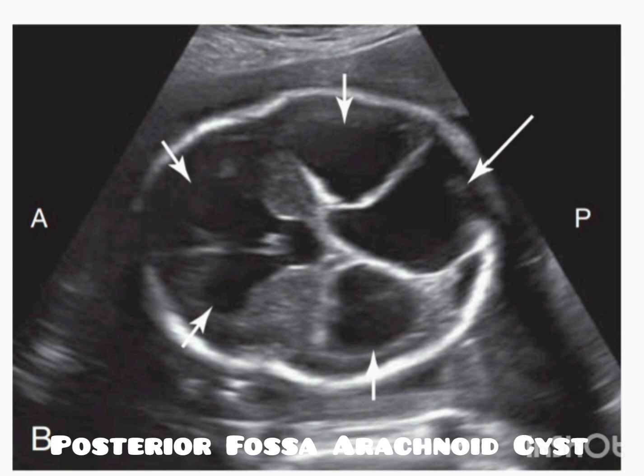Ultrasound features that favor a posterior fossa arachnoid cyst include asymmetric location of the fluid around cyst margins. The Dandy-Walker cyst tends to be more triangular, and the cerebellar anatomy is normal, or there is en bloc displacement and compression of the cerebellar hemispheres.